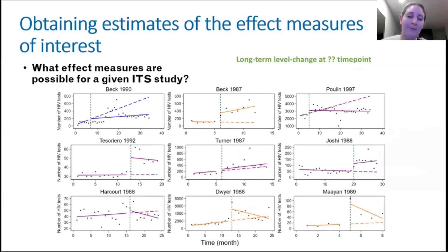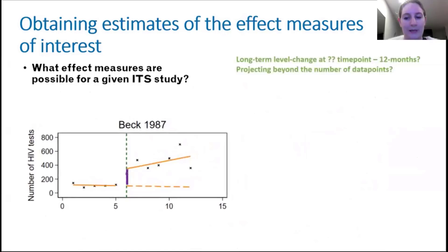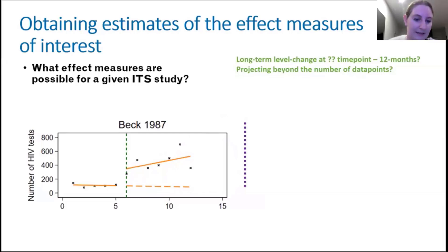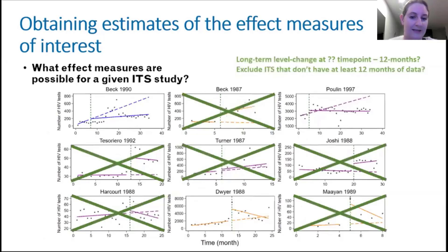What might we be interested in? Ideally, we'd want to look at a long-term level change calculated 12 months after the interruption. But can we calculate it? Zooming in on this study, we don't have 12 months of post-interruption data. Our statistical software will spit out a long-term level change at 12 months, but it would be projecting beyond the data we actually have. So we might not want to include this in our meta-analysis. If we continue with 12 months as our time point, excluding all studies without 12 months of data, we'd only be left with three ITS studies.